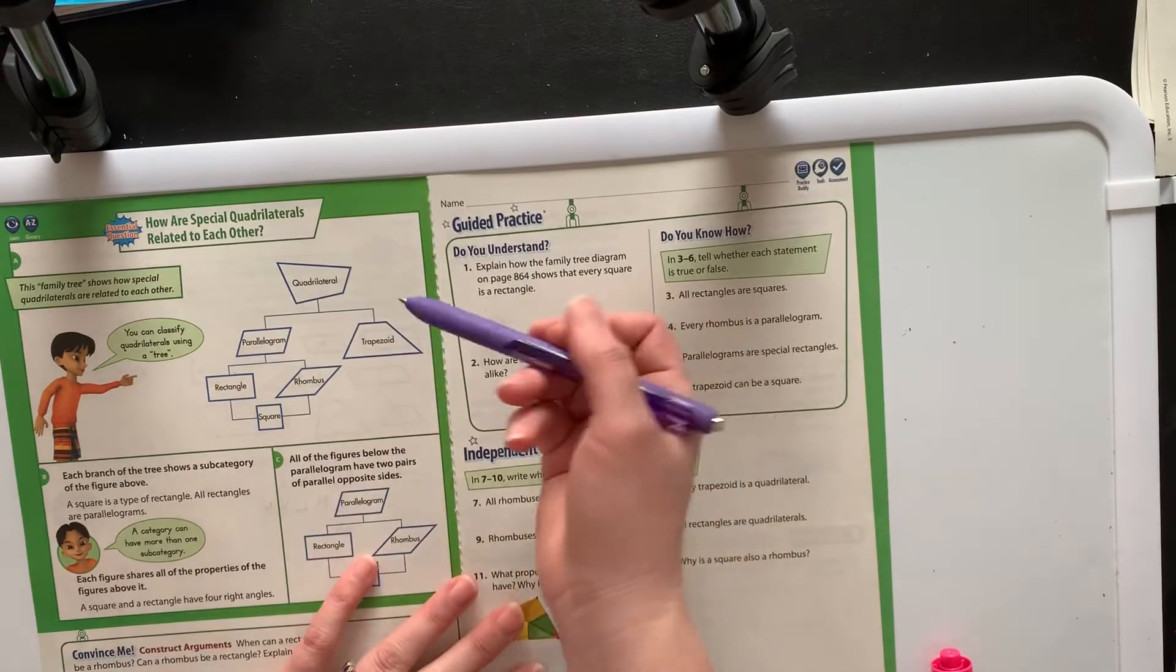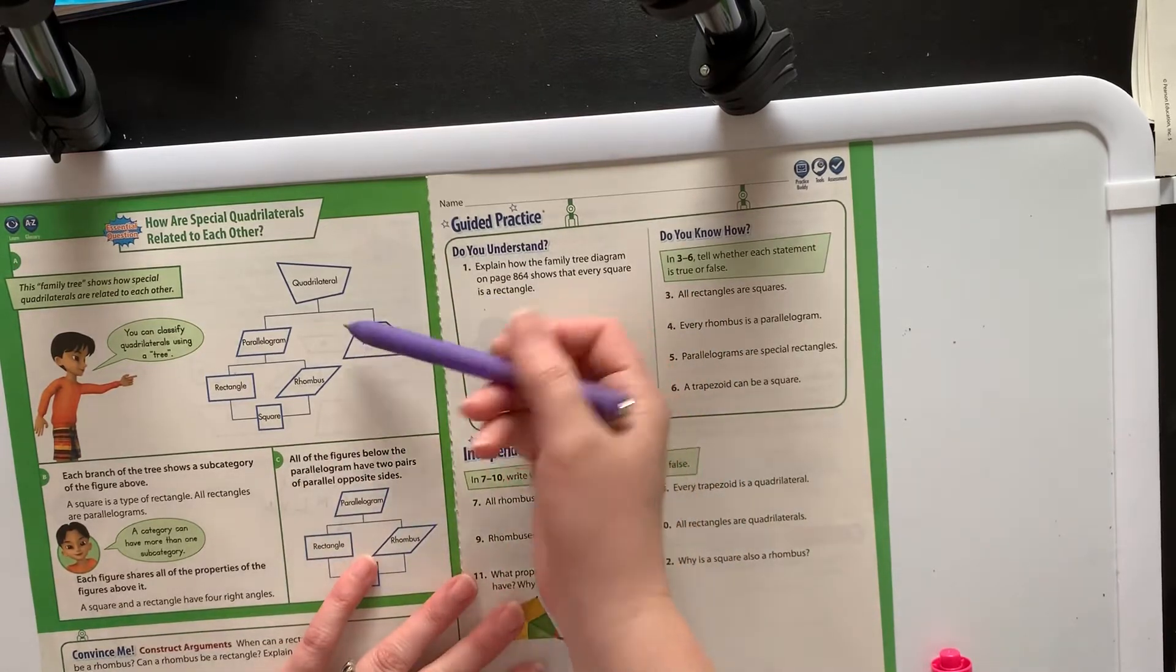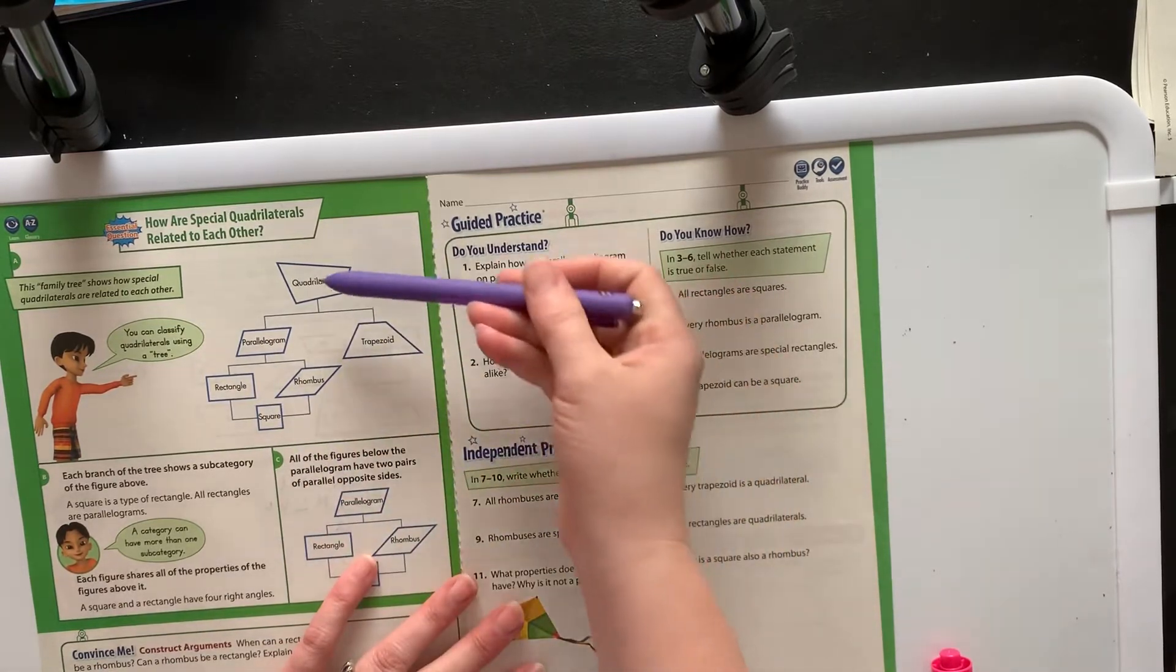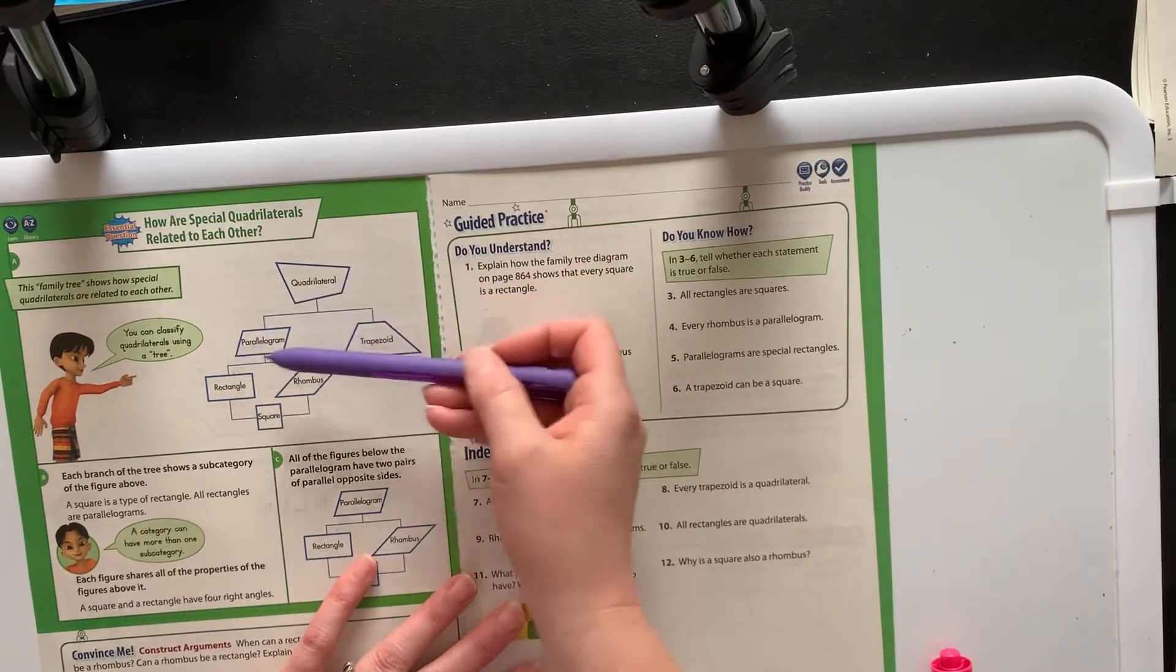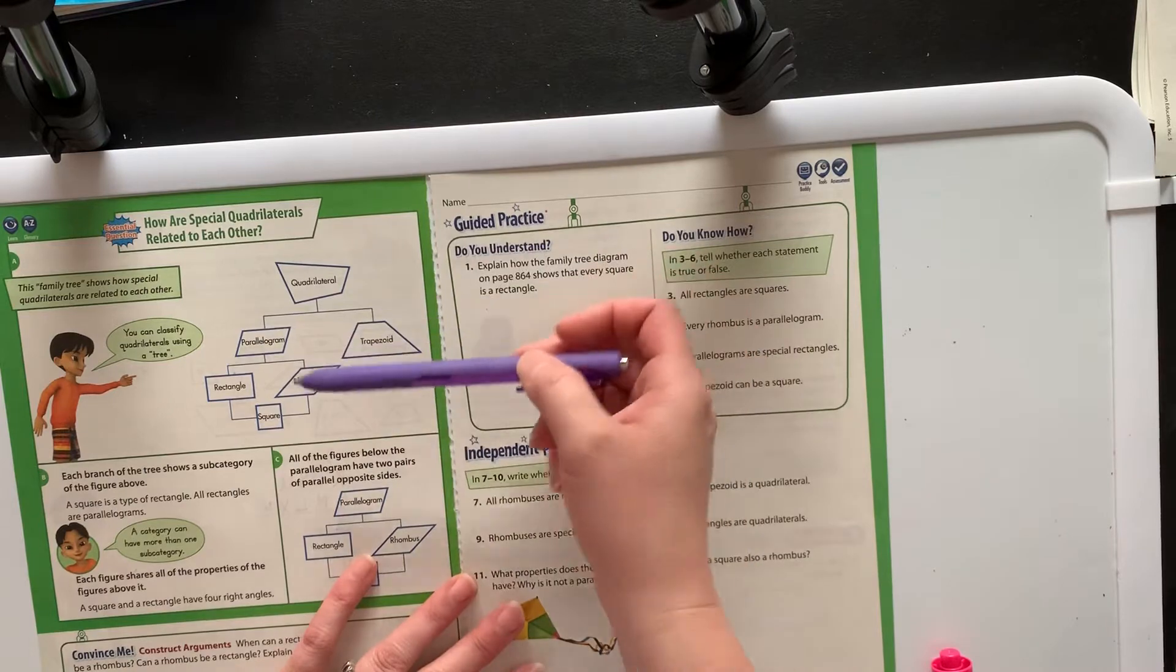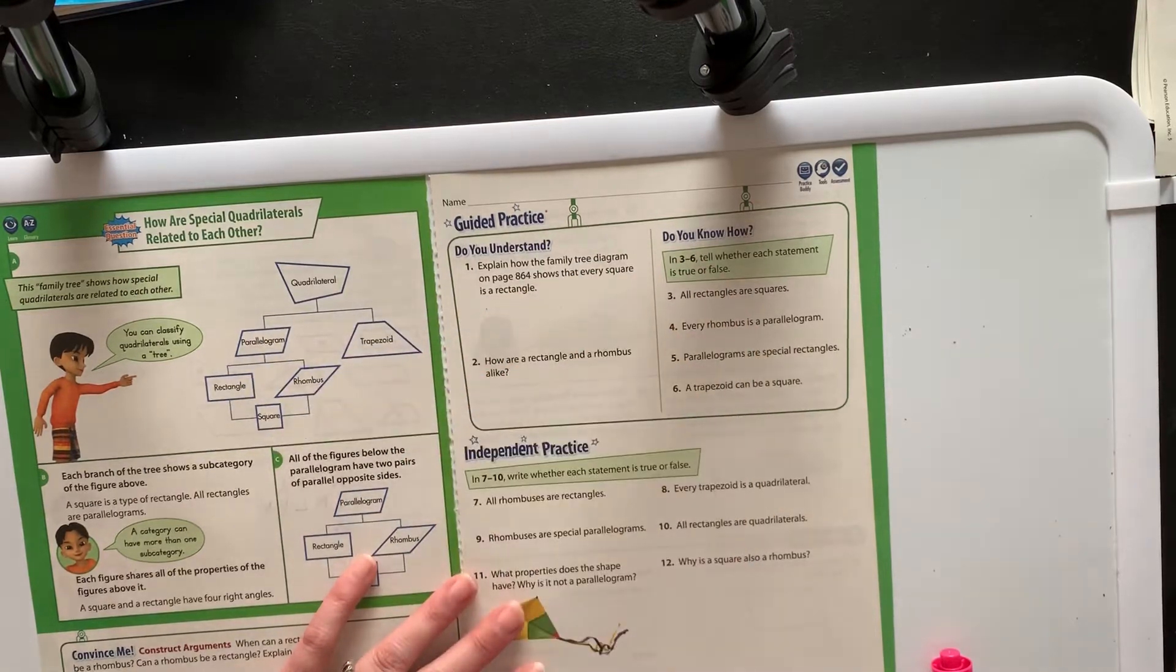This is on the back of page 684 in your book, and basically if you start at the top and sort of work your way down, they're all quadrilaterals. The parallelogram, the trapezoid, the rhombus, the rectangle, the square - they're all quadrilaterals.